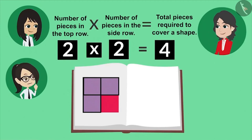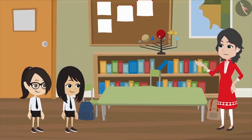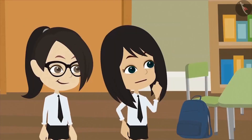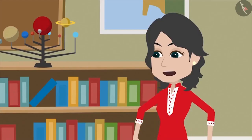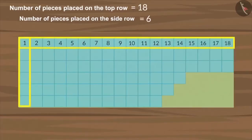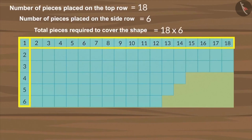In this particular shape we could count and find out, but it is not easy to count when there are very large shapes such as your desk — in such situations this method works better. Now we will try to measure the desk. Eighteen pieces are placed on the top row and six on the side, so we multiply them: six by 18 gives 108. Does this mean we will require 108 pieces to cover the desk? Yes.